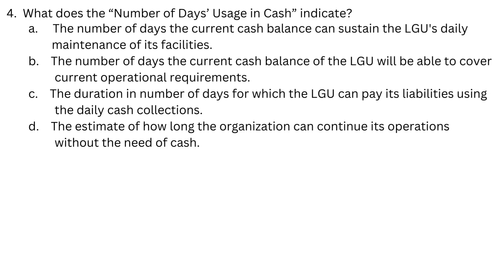Number 4. What does the number of days usage in cash indicate? A. The number of days the current cash balance can sustain the LGU's daily maintenance of its facilities. B. The number of days the current cash balance of the LGU will be able to cover current operational requirements. C. The duration in number of days for which the LGU can pay its liabilities using the daily cash collections. D. The estimate of how long the organization can continue its operations without the need of cash.